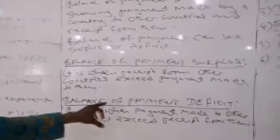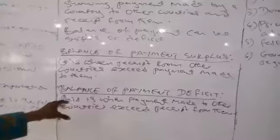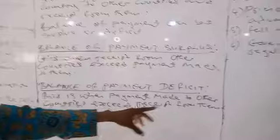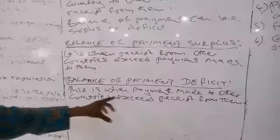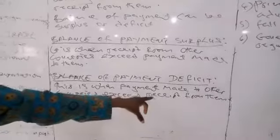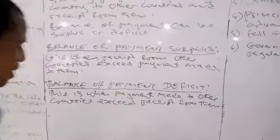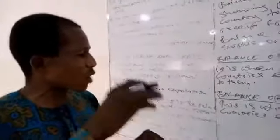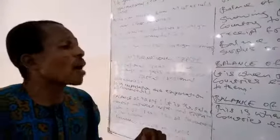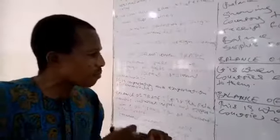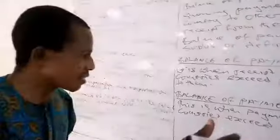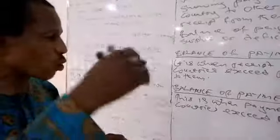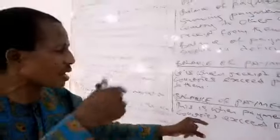Balance of payment deficit is when the payment made to other countries exceeds the receipts received from them. In this case, if the money you are paying to other countries is more than the money you are receiving from them, there is a deficit — that is, your payment to other countries is more than what you are receiving.